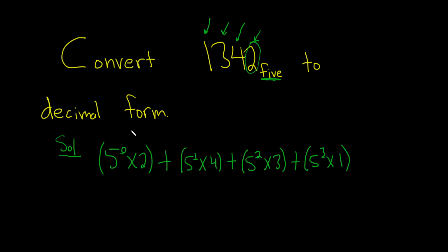I'm definitely going to use a calculator for some of this. 5 to the 0 is 1, so this is 1 times 2, which is 2. And this is 5 to the 1 times 4, so that's 20.